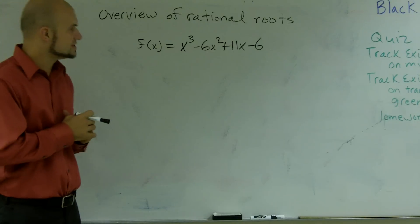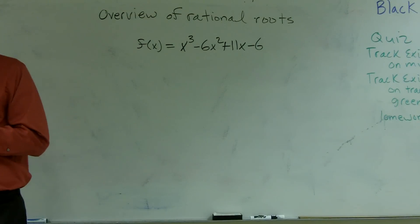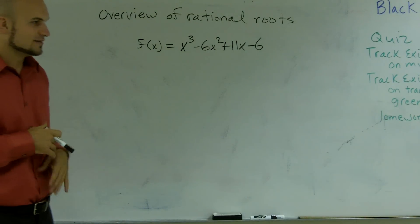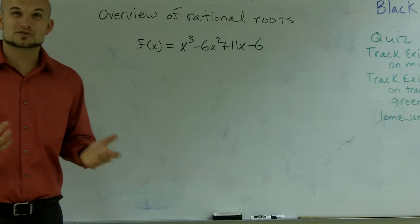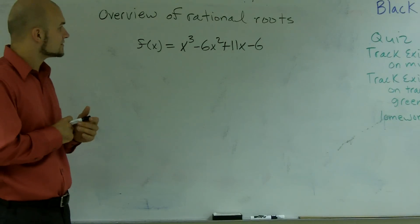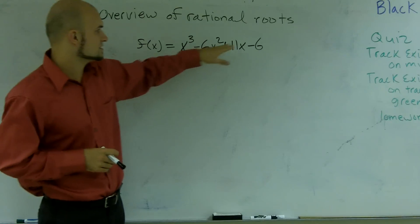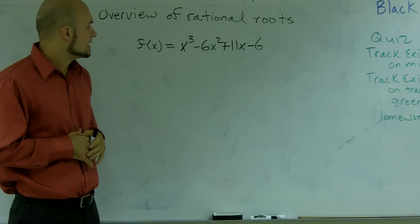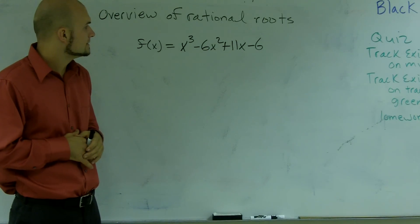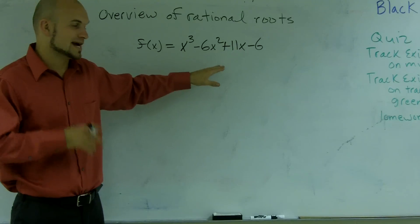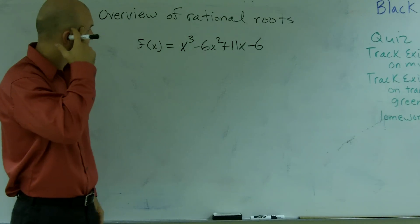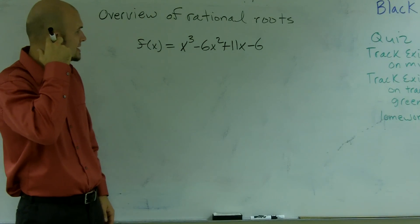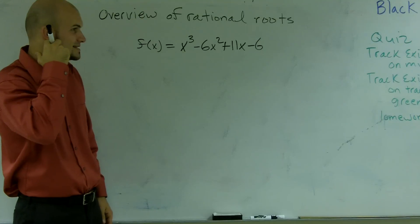What we're going to do for this problem is look and see if we can factor it, because that's usually the easiest way to start. I want to first look if I can factor anything out — no. Since there are four terms, I automatically think factor by grouping, but factoring by grouping is not really going to help me out here; I'm not going to get the exact same factors.